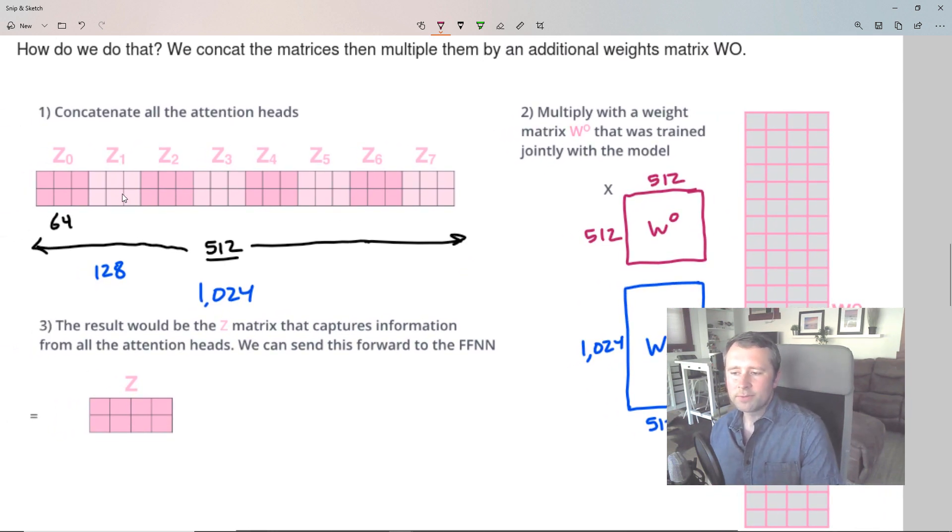So because we have eight heads with 64 features each, we don't technically need this output weight. But maybe though something else that it could be doing here besides just projecting back to 512 is that it allows the network to learn how it wants to recombine these eight attention results. So it's adding some more expressive power to the model. But in any case, we concatenate the results for all of the attention heads, multiply them by this matrix W out, O for output. And then we get back to finally our two by 512 matrix that we send on to the next layer.